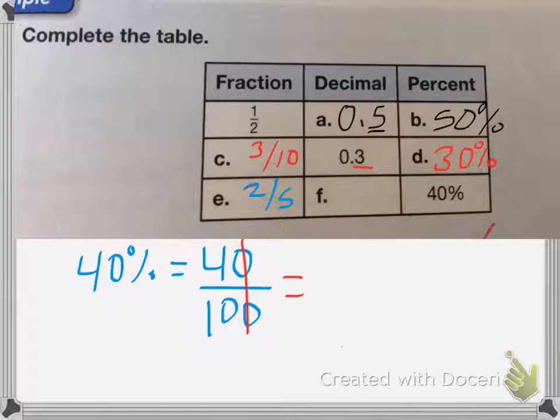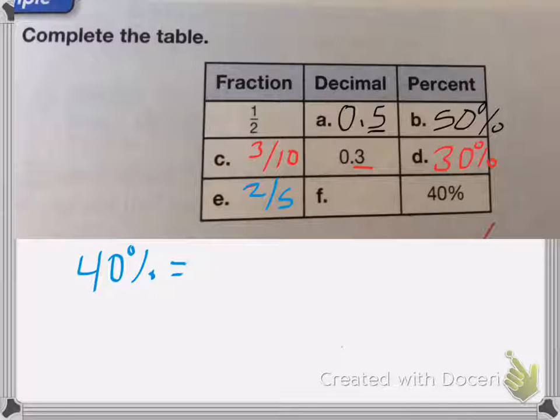Okay, and now you change 40% into a decimal. So I know that 40%, that means that the 40 has to be in the hundredths place. So it's going to be 0.40. But since we know we can reduce and simplify, I can get rid of this extra zero, and my answer is 0.4.